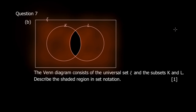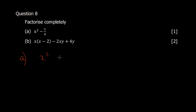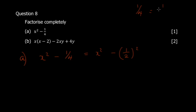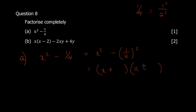Question 8A: factorize x squared minus one quarter. This is a difference of two squares — both terms are perfect squares. One quarter can be written as (1/2) squared. When you have a difference of two squares, you write: (x + 1/2)(x − 1/2). That's the factorized form.